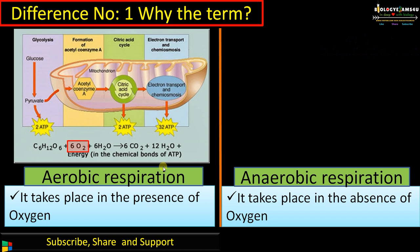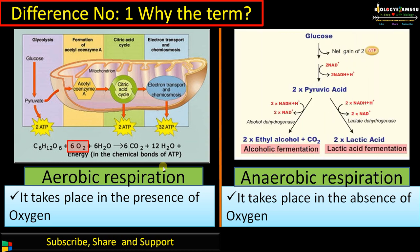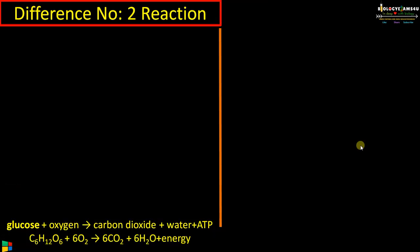In anaerobic respiration, it takes place in the absence of oxygen. Here, glucose is converted to pyruvic acid through glycolysis, which is an anaerobic process. Then it is converted to either ethyl alcohol or lactic acid. Oxygen is not involved in the process.